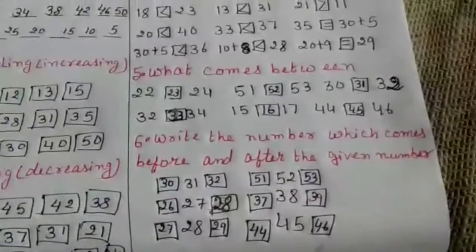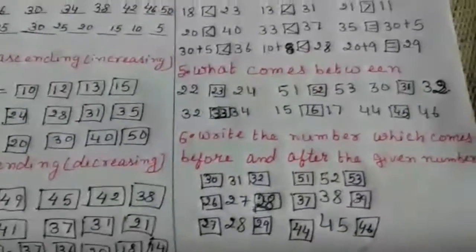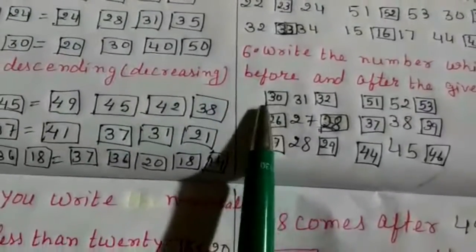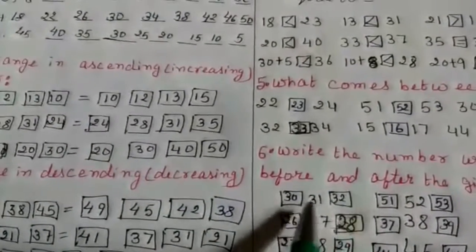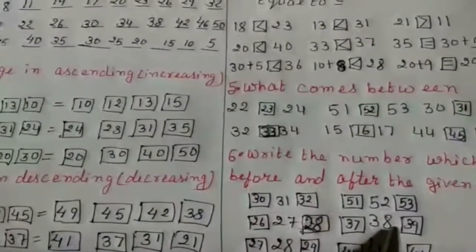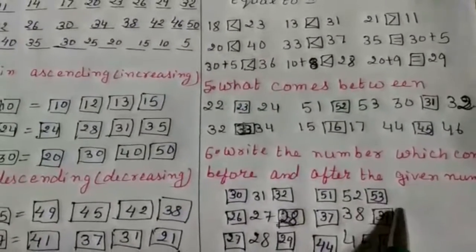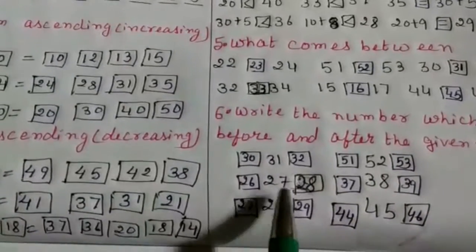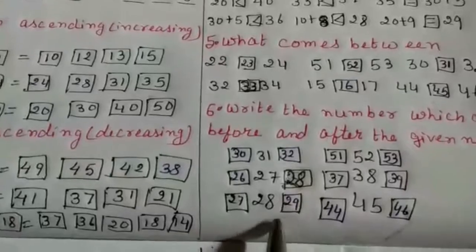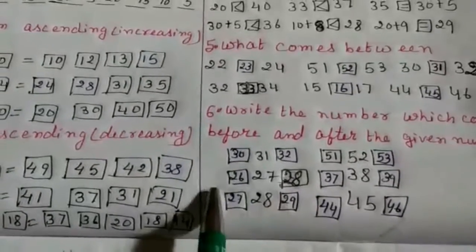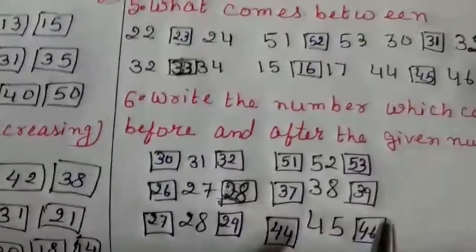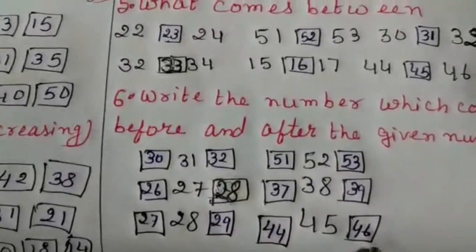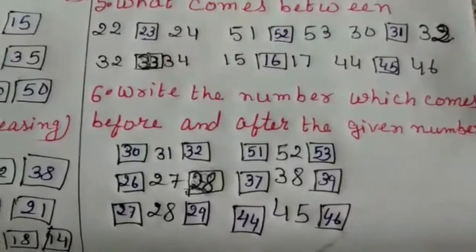Question number 6: write the number which comes before and after the given number. For 28: before 28 is 27, after 28 is 29. For 38: before 38 is 37, after 38 is 39. For 45: before 45 is 44, after 45 is 46.